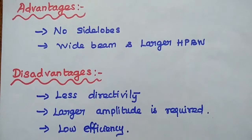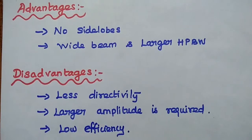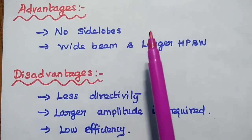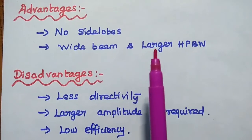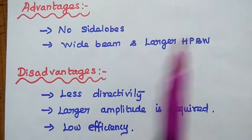The major advantages of binomial array antenna: there are no side lobes, it has wide beam width, that is a larger half power beam width.